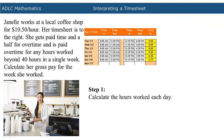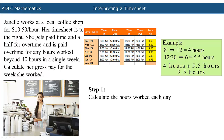The first step is to calculate the number of hours she worked each day. These amounts can be placed in the total hours column. For example, for the Tuesday shift, Janelle worked 8–12, which is 4 hours, and 12:30–6, which is 5.5 hours. This adds up to 9.5 hours.